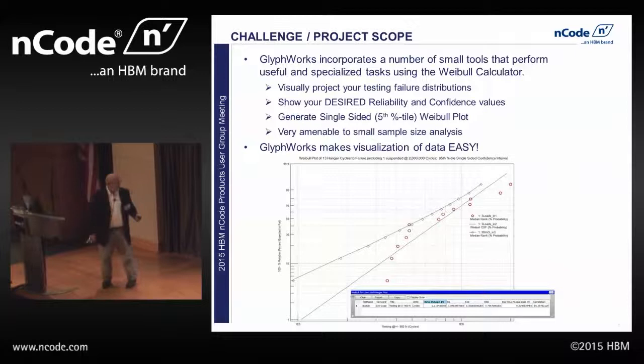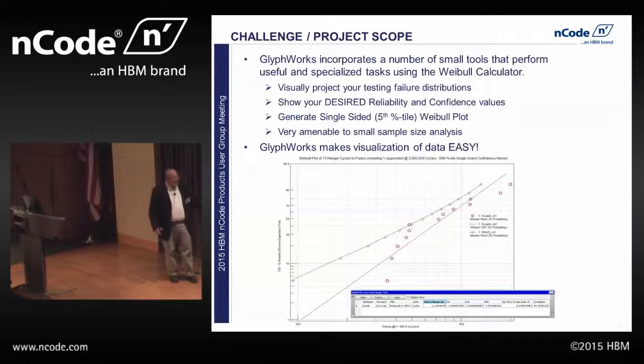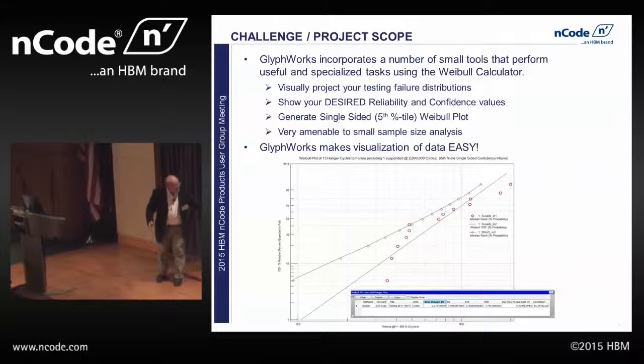Weibel in itself shows the confidence bound, and it shows the best fit — that's called the slope or the beta number. This is your confidence. Everything over here, in this case it's a 95th percentile — 5% of your data is over here, the other 95% is over here. This is the bad area. Weibel plots start with 10 down here — that's the 10% that fail. Glyphworks makes it easy to generate either single-sided or double-sided; a double-sided one would have a second line running along here, and the confidence interval would be between those two lines.